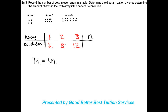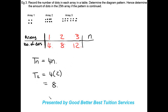To verify: if we want to find the number of dots in array 2, we say term 2 = 4 × 2 = 8. You can see array number 2 corresponds to term 2, and we get 8 — which confirms the rule is correct.